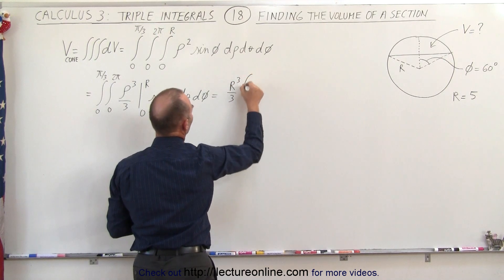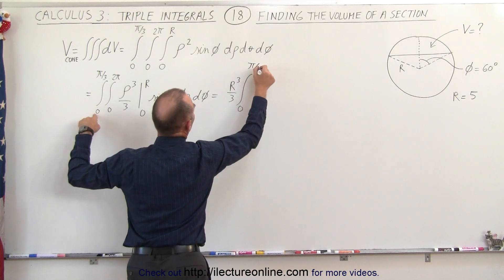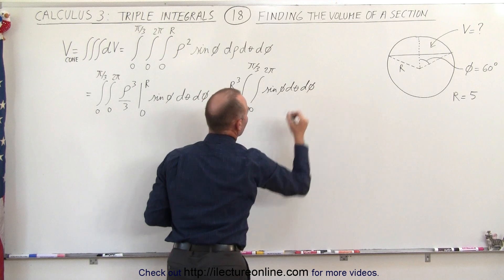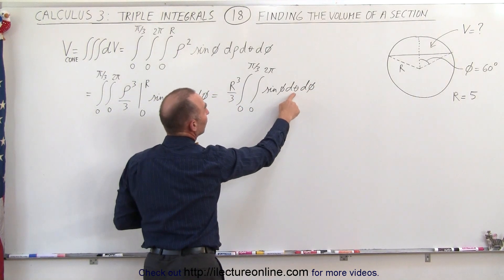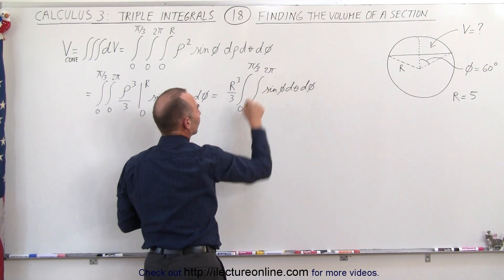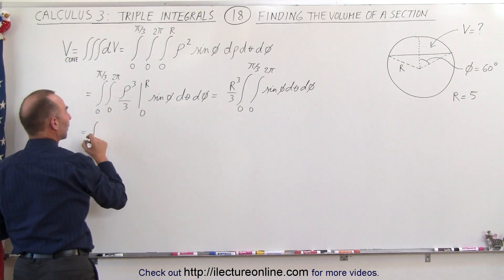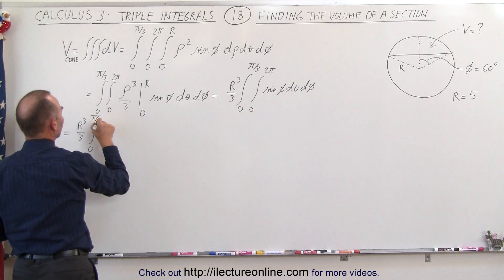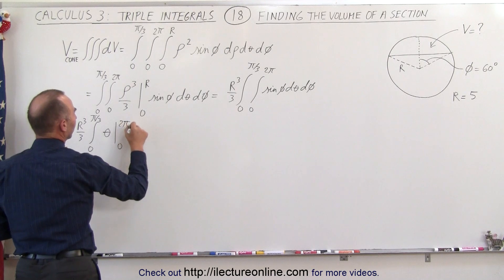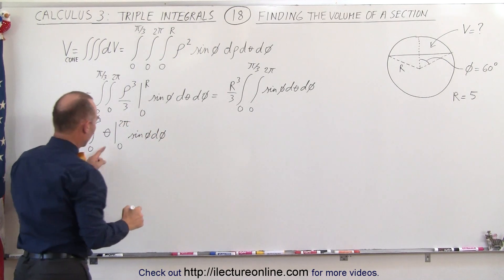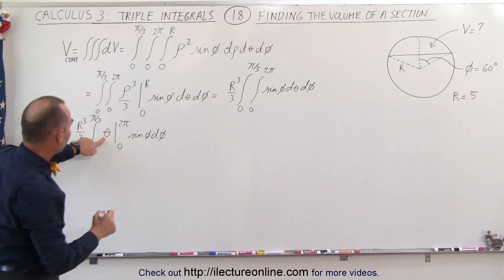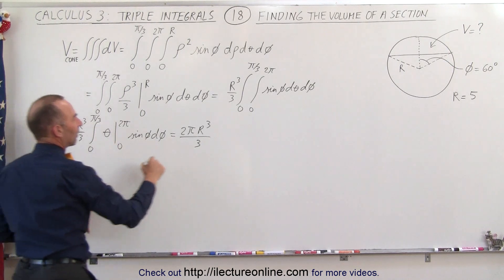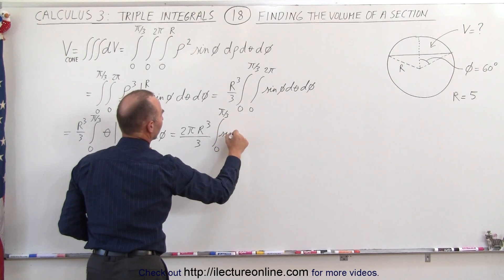We can pull out r cubed over 3, leaving the integral from 0 to pi over 3 and the integral from 0 to 2 pi of sine of phi d-theta d-phi. The next integral is the theta integral. Integrating d-theta gives theta, evaluated from 0 to 2 pi, giving 2 pi. Plugging in gives 2 pi r cubed over 3, and we have the single integral from 0 to pi over 3 of sine of phi d-phi left.